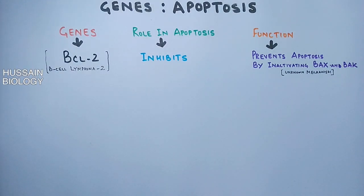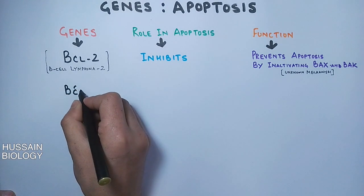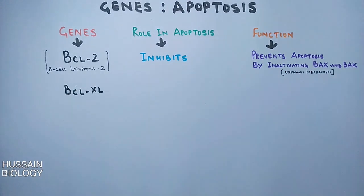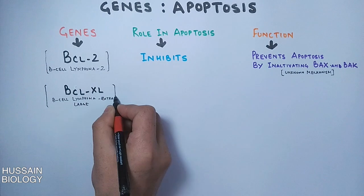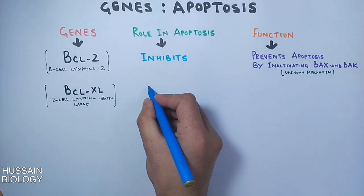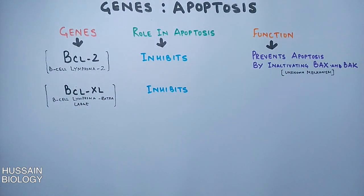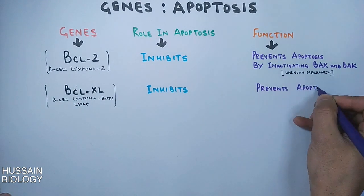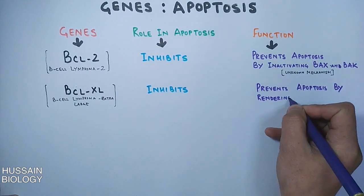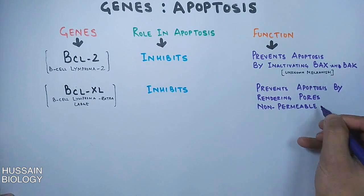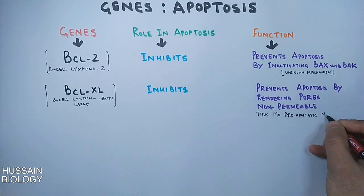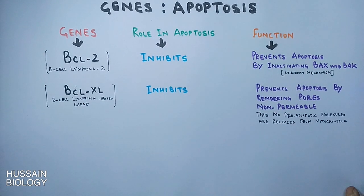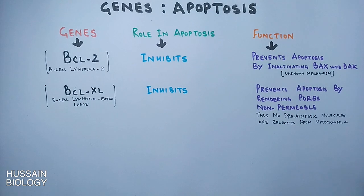The second important gene and its protein is BCL-XL — BCL lymphoma extra large. It also inhibits apoptosis. Its function is to render the mitochondrial pores impermeable, thus preventing the release of pro-apoptotic factors such as cytochrome c from the mitochondria.